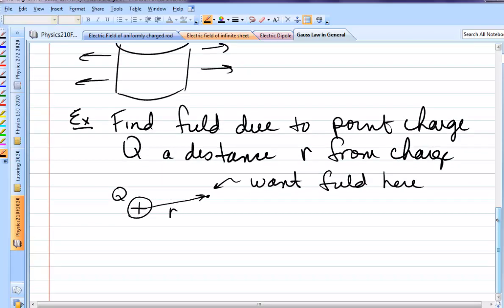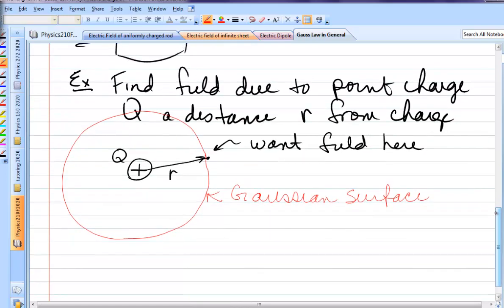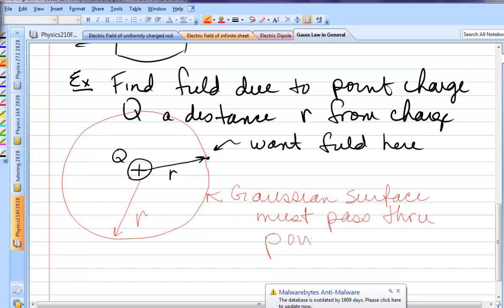Step two is to choose and draw a Gaussian surface. You have two choices. It's either a sphere or it's a cylinder. The way you decide is, if it's a spherical charge distribution, you use a sphere. If it's an infinitely long rod, or a sheet, or a hollow cylinder, or something, you use a cylinder. In this case, it's going to be a sphere. I'm going to draw my Gaussian surface in red. The Gaussian surface must go through the point where you want the field. This red thing is a spherical Gaussian surface. It's just a tool. It's an abstract mathematical thing that we draw that helps us do this calculation. The radius of this Gaussian surface is the same as the radius of the distance from Q to where we want the field. The Gaussian surface must pass through the point where you want the field.